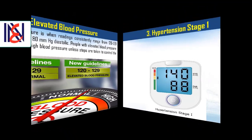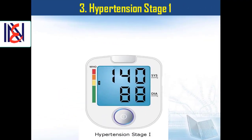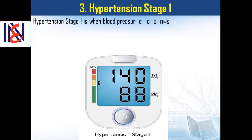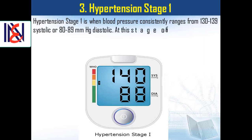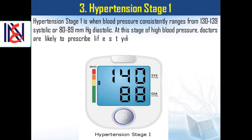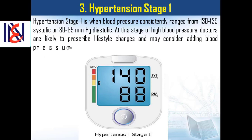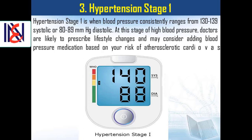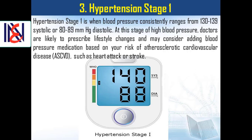3. Hypertension Stage 1. Hypertension Stage 1 is when blood pressure consistently ranges from 130 to 139 systolic or 80 to 89 mmHg diastolic. At this stage, doctors are likely to prescribe lifestyle changes and may consider adding blood pressure medication based on your risk of atherosclerotic cardiovascular disease, such as heart attack or stroke.